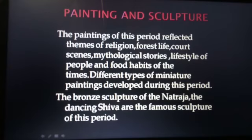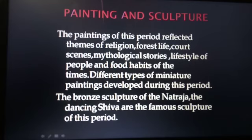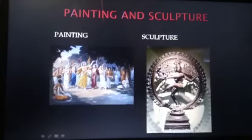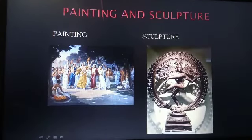Paintings and Sculptures: The paintings of this period reflected themes of religion, forest life, court scenes, mythological stories, lifestyle of people and food habits of the time. Different types of miniature paintings developed during the medieval period. The bronze sculpture of Nataraja — the dancing Shiva — is a famous sculpture of this period. See here the painting and sculpture of the famous Nataraja.